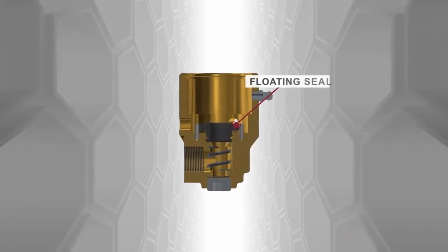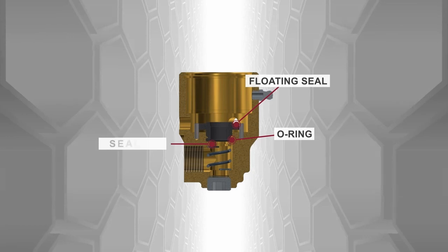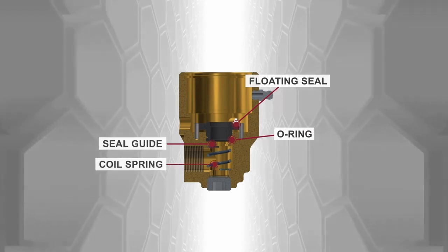Now the floating seal, o-ring, seal guide and coil spring can all be removed from the union.